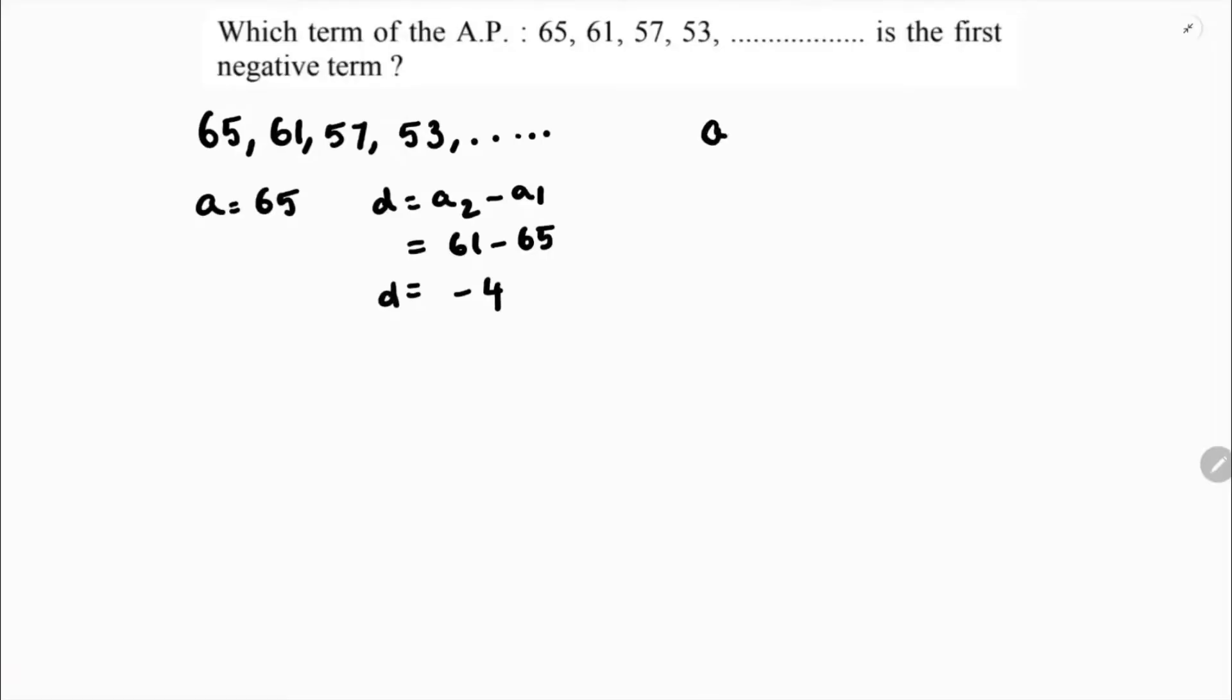Now see, to find the first negative term we will use the inequality aₙ less than 0, because less than 0 only we'll get the first negative term. So here, aₙ formula is a plus (n minus 1) times d, less than 0.